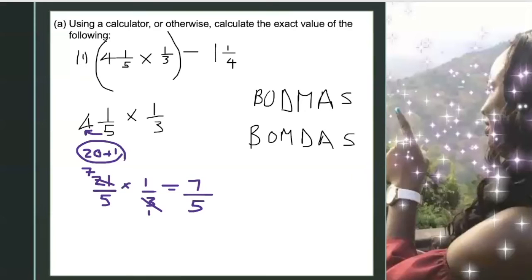So once again, all I did was just change this to an improper fraction. 5 times 4 is 20 plus 1, that's 21 over 5 multiplied by 1/3. And then 3 into 21 goes 7 times. So 7 times 1, that's 7, and 5 times 1, that's 5.